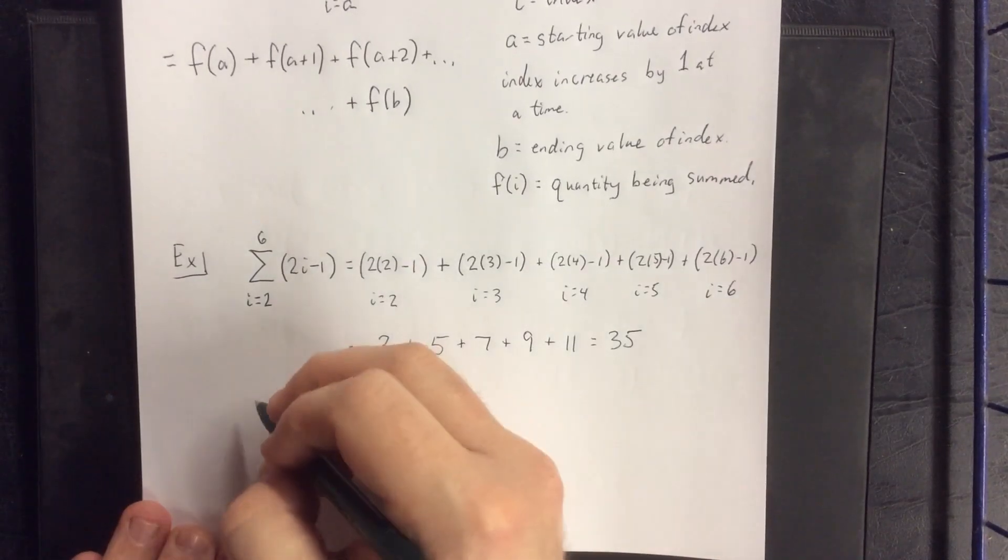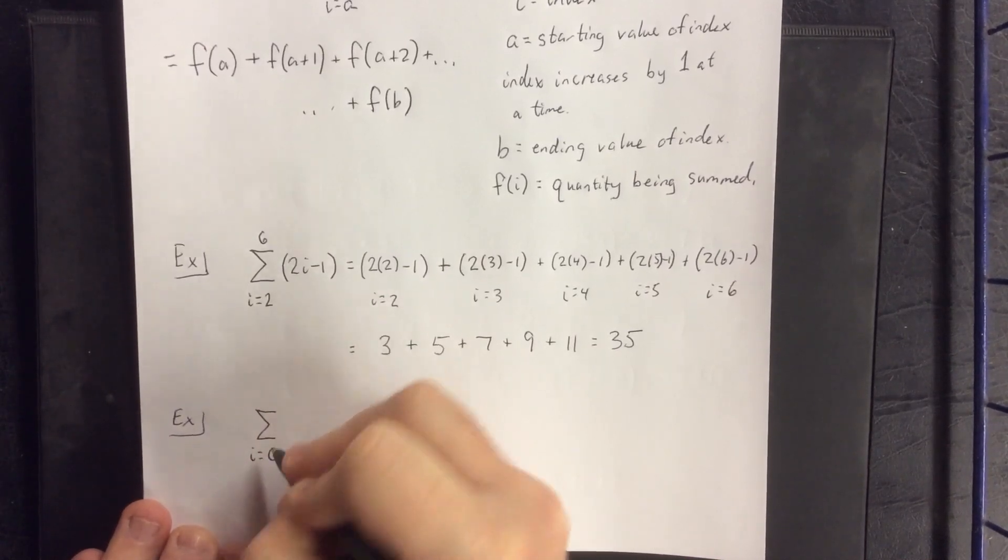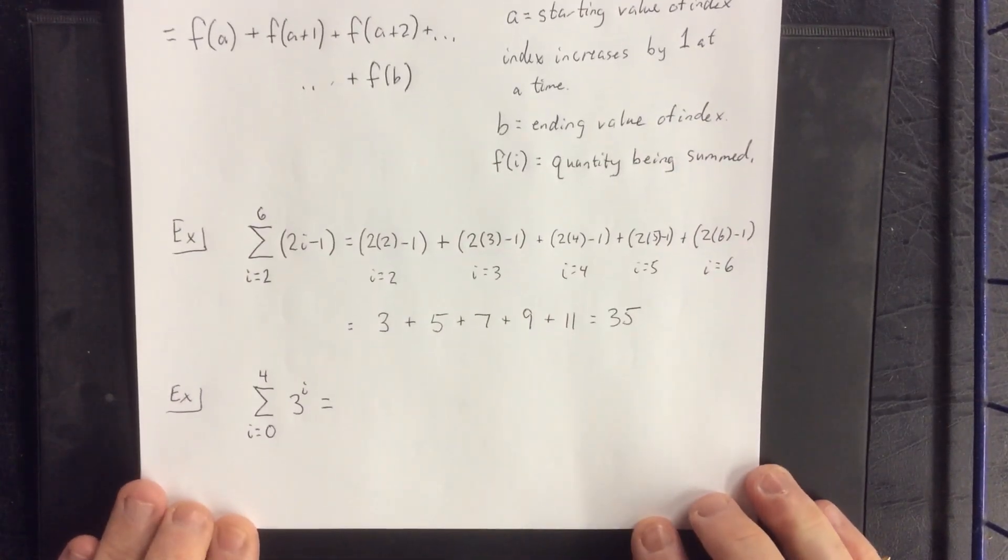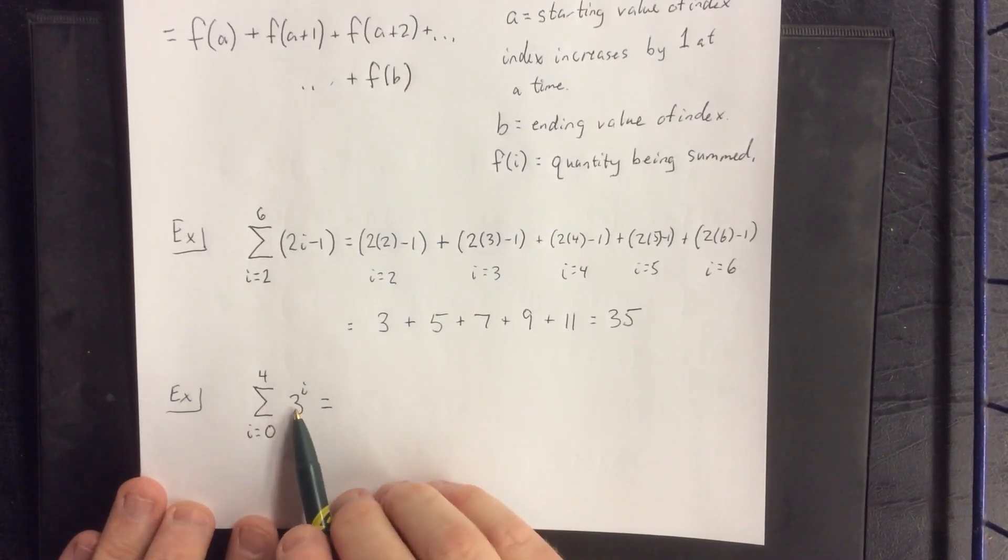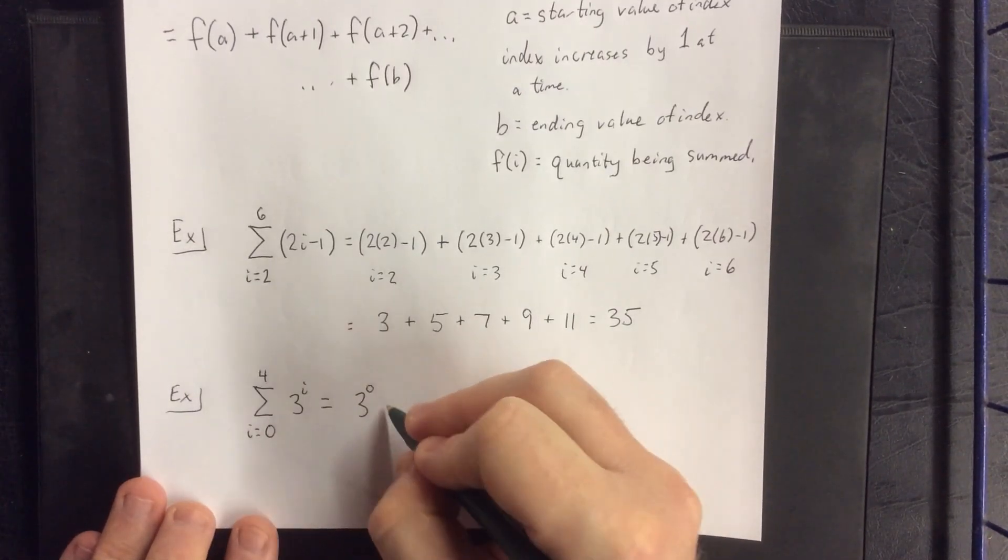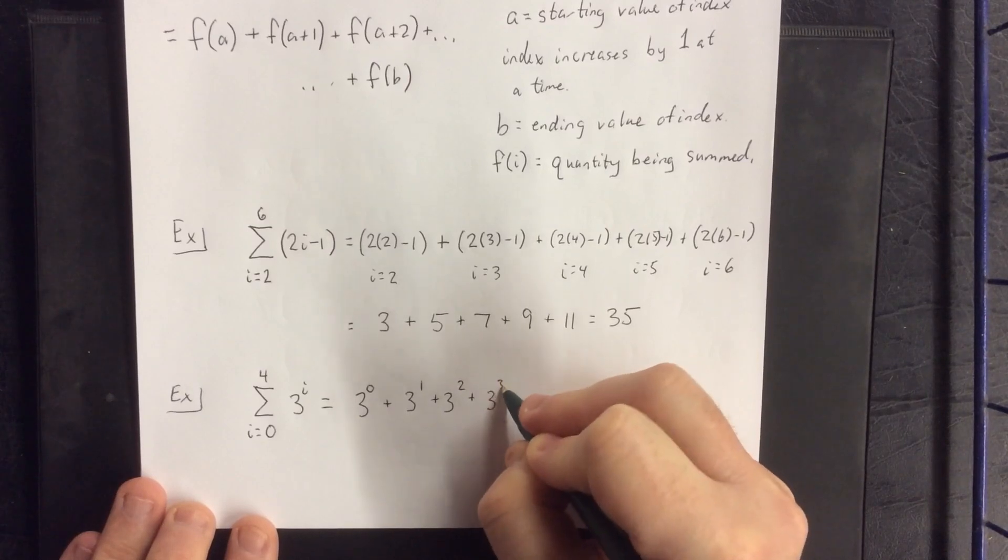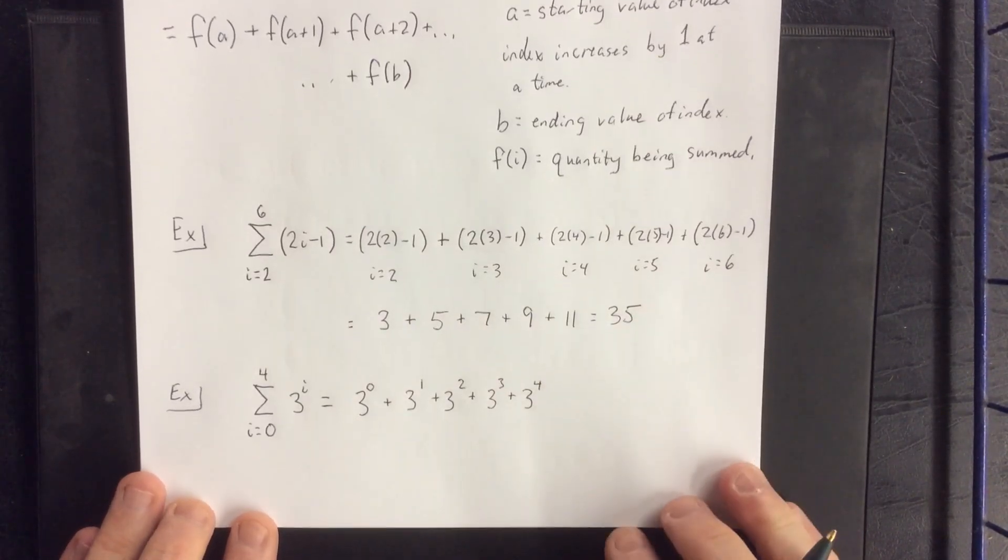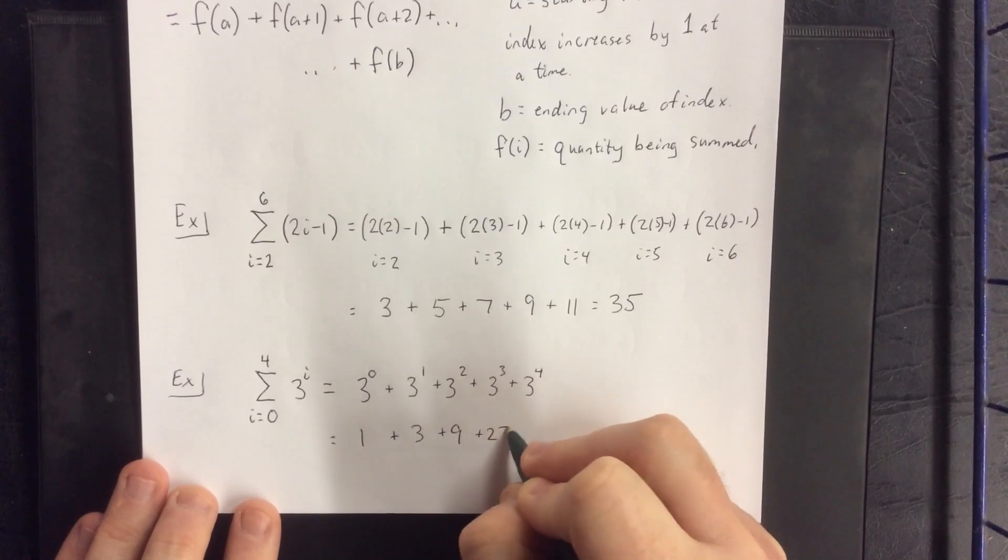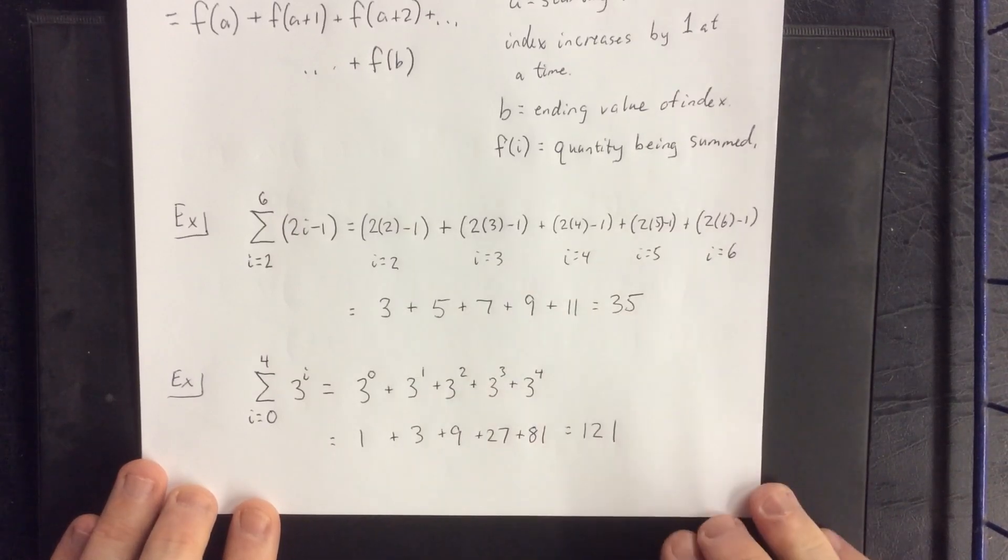Another example that we could do. We could do the summation from I equals zero to four of three raised to the I power. So this time the function that I'm plugging things into would be three raised to the I power. So that would be three raised to the zero power plus three raised to the first power. The index goes up one at a time until we get to our stopping point at three raised to the fourth power. This would be equal to one plus three plus nine plus twenty-seven plus eighty-one. And some quick arithmetic lets me know that that sum is one hundred twenty-one.